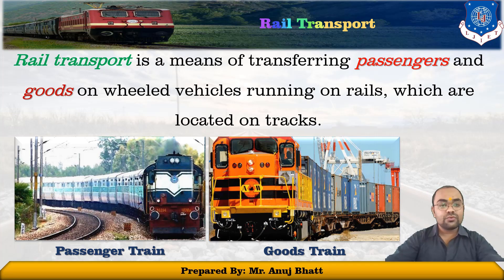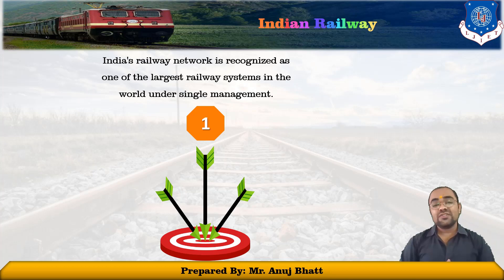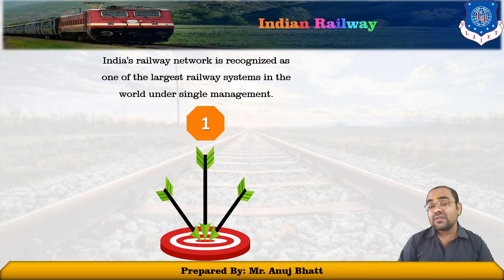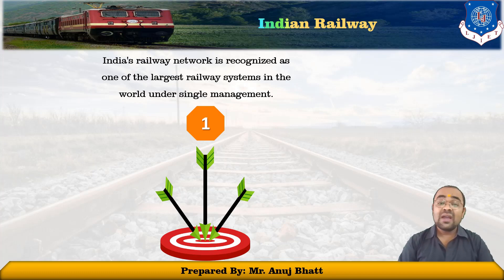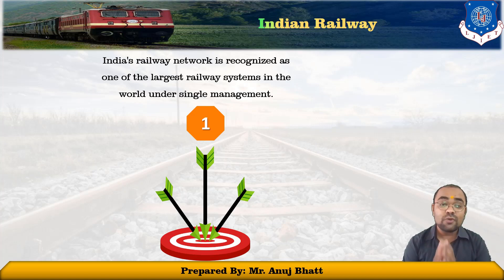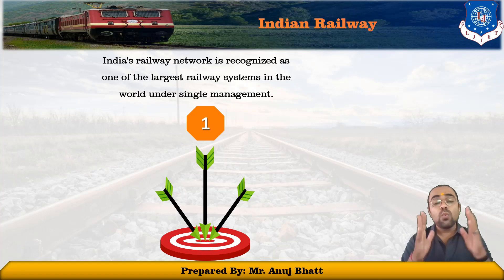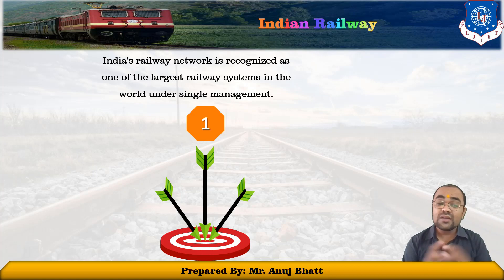That is a brief intro about rail transport. Discussing Indian Railways, it is among the world's largest rail networks, spread over about 67,956 kilometers, with 13,169 passenger trains, 8,479 freight trains, flying 23 million travelers and 3 million tons of freight daily from 7,349 stations. Indian Railways is recognized as one of the largest railway systems in the world under a single management.